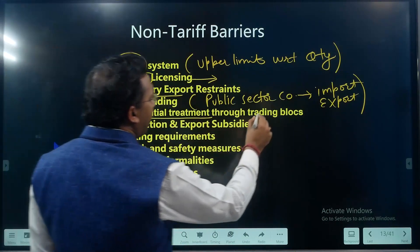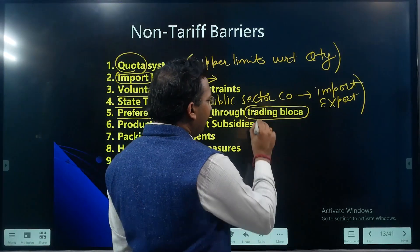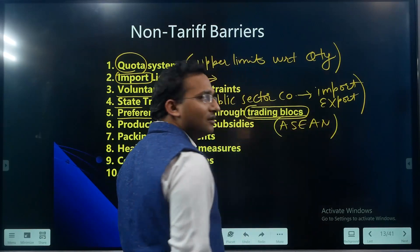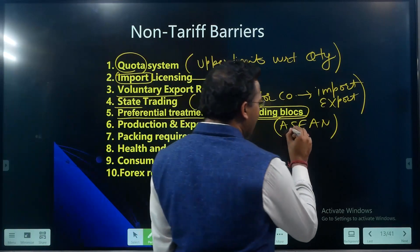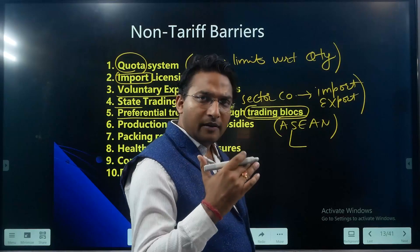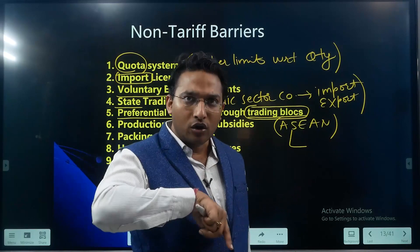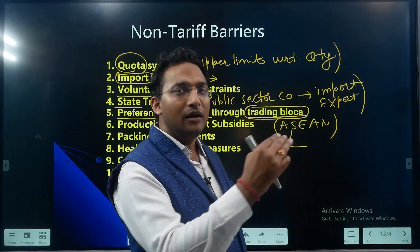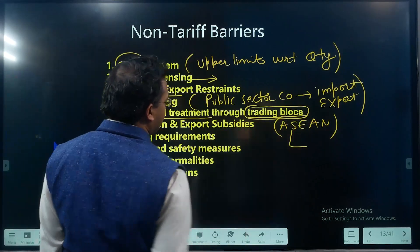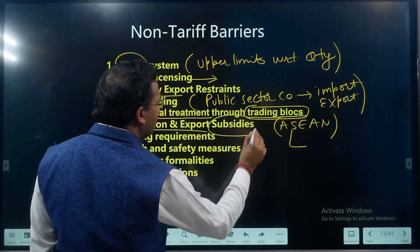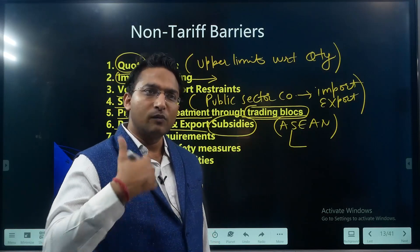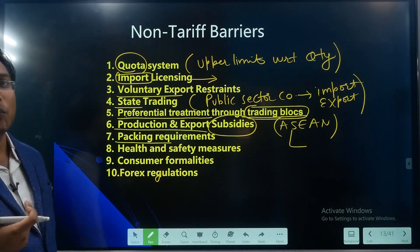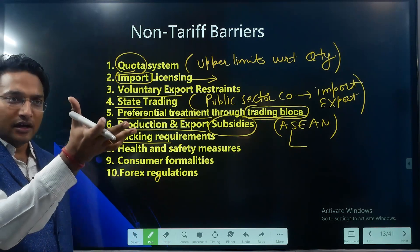Fifth is preferential treatment through trading blocs. There are various trading blocs, for example ASEAN — the Association of Southeast Asian Nations. Member countries agree that imports and exports done with other member countries will be given preference, while trade with non-member countries will not be preferred. Sixth is production and export subsidies — these subsidies can be given either to promote exports or to control imports.